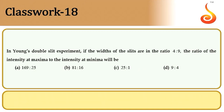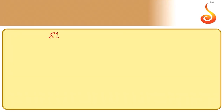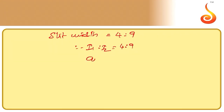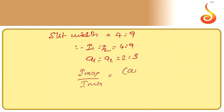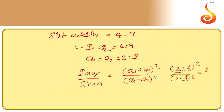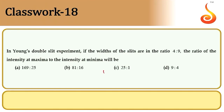Example 18: In Young's double slit experiment, slit width ratio is 4:9, so I1:I2 = 4:9 and a1:a2 = 2:3. Therefore I_max/I_min = (a1+a2)²/(a1-a2)² = (2+3)²/(2-3)² = 25:1. Option C is correct.